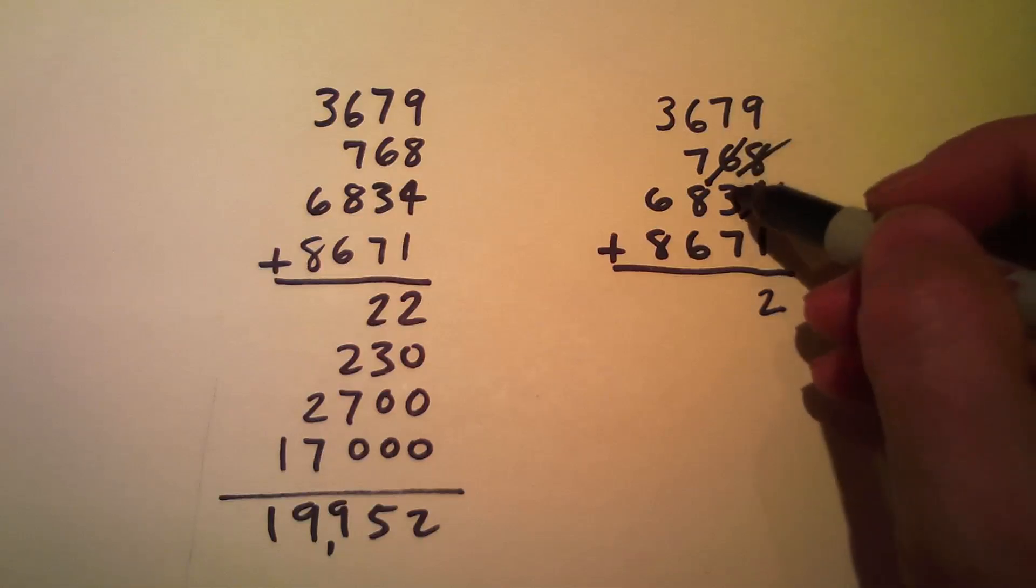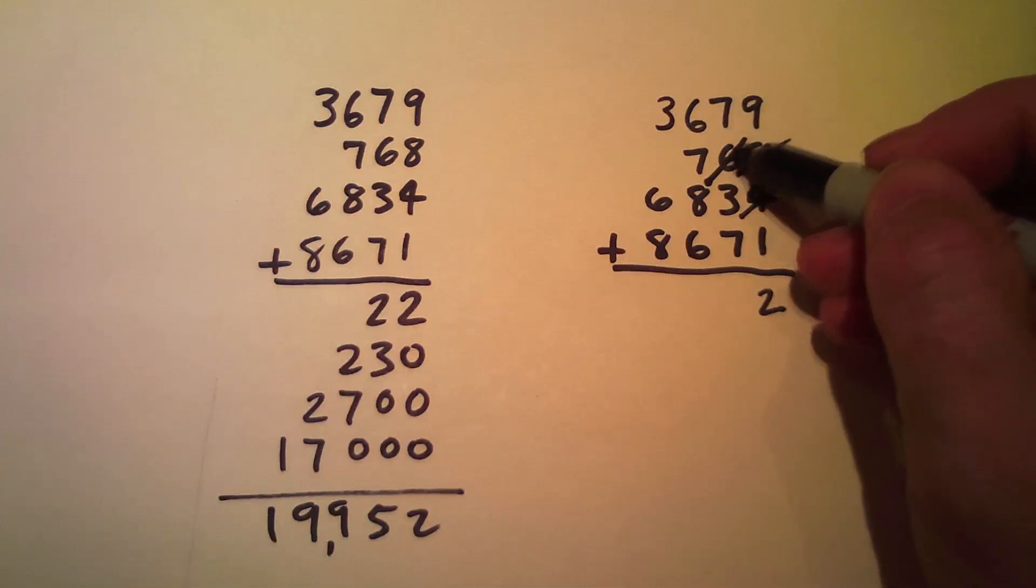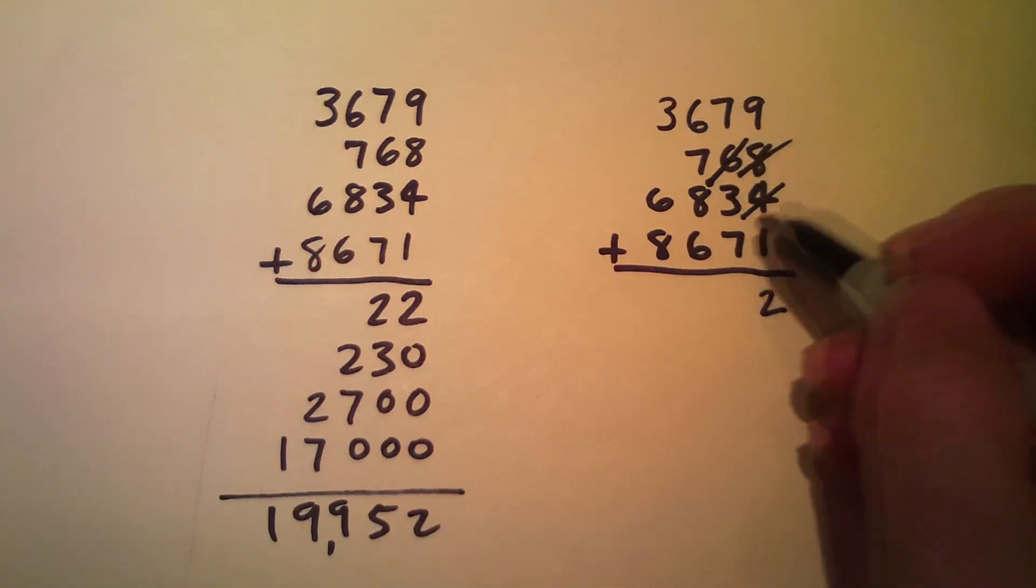So notice this is 2 and 7 is 9, 9 and 6 is 15. I put a scratch through and kept up only with the 5. 5 and 3 is 8, 8 and 7 is 15.